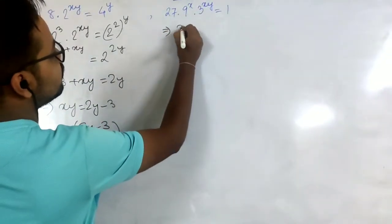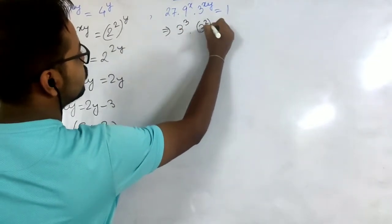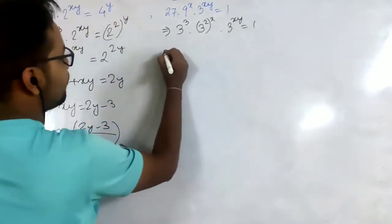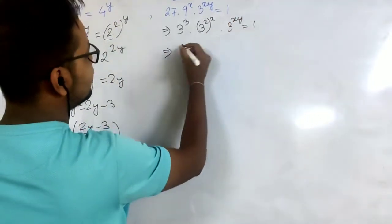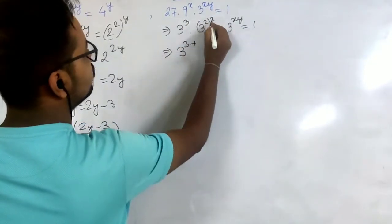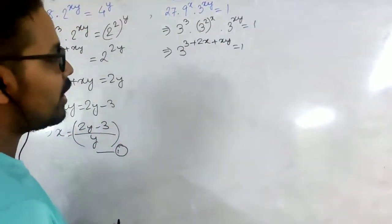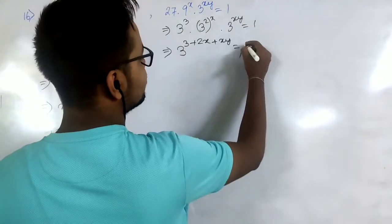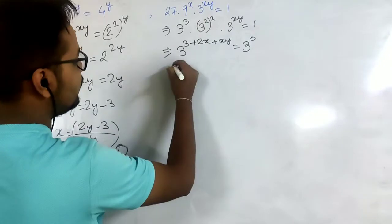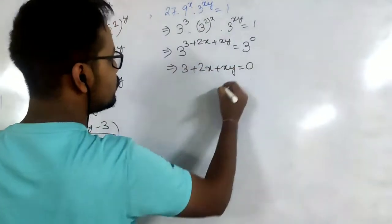In the second equation, 27 can be written as 3 to the power 3, and 9 can be written as 3 squared to the power x, and 3 to the power xy equal to 1. All the bases are the same, so we add the powers: 3 plus 2x plus xy. Since 1 equals 3 to the power 0, and bases are the same, the exponents are equal, giving us 3 + 2x + xy = 0.